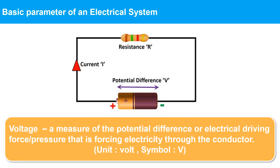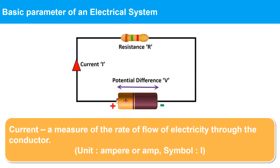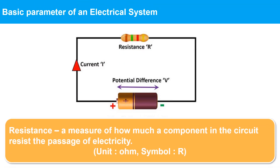Let us understand the basic parameters of an electrical system such as the circuit. Voltage is a measure of the potential difference or electrical driving force that pushes electricity through the conductor; unit is volt, symbol V. Current is a measure of the rate of flow of electricity through the conductor; unit is ampere or amp, symbol I. Resistance is a measure of how much a component resists the passage of electricity; unit is ohm, symbol R.